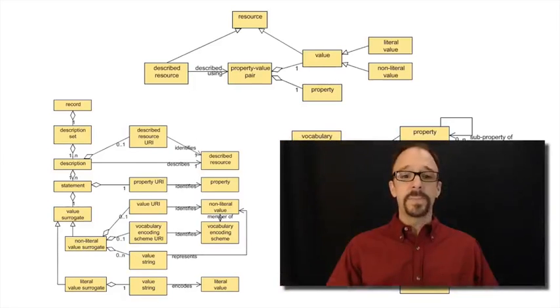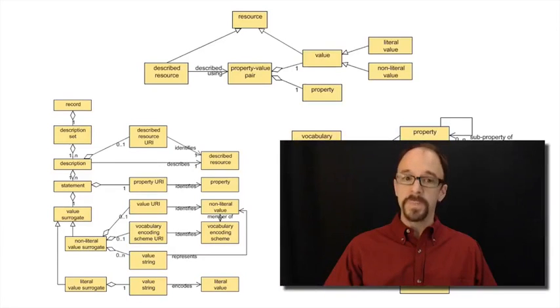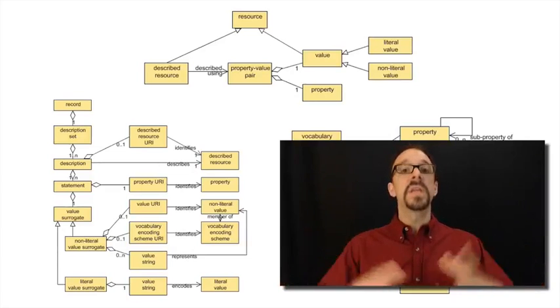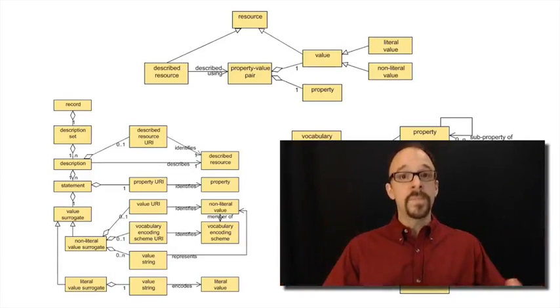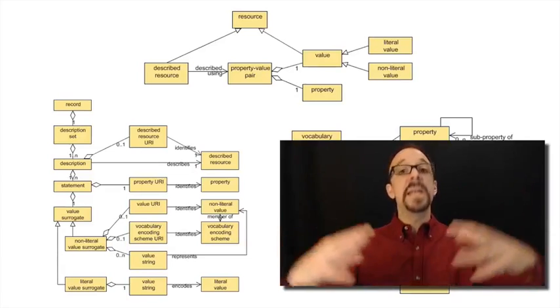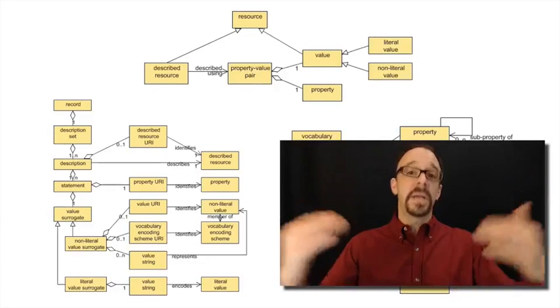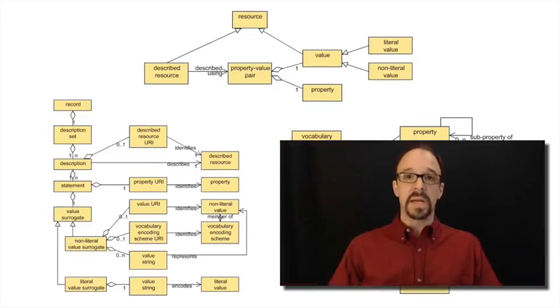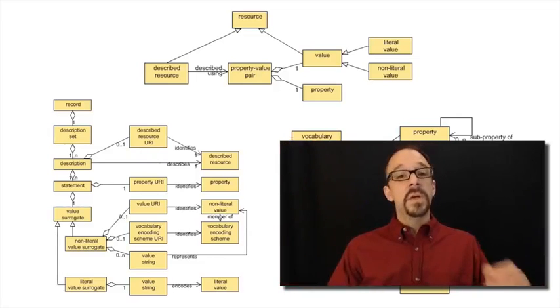So, you will, I hope, recognize this figure as the Dublin Core abstract model. Which, of course, is a representation of the parts and connections within the universe of Dublin Core. And within the universe of metadata more broadly, because it was intended to be a generic model on which Dublin Core and other metadata schemas can be built.